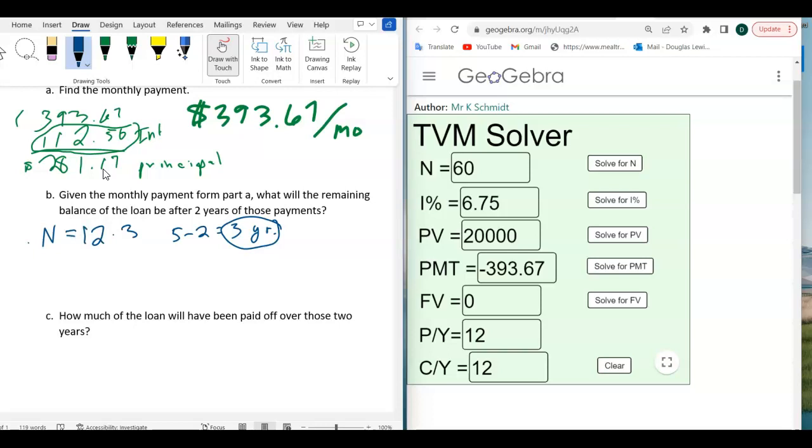So you have 12 times a year times three years. So that should be 36. The N, you have 36 payments remaining. So this isn't the total payments. You have 36 payments remaining.